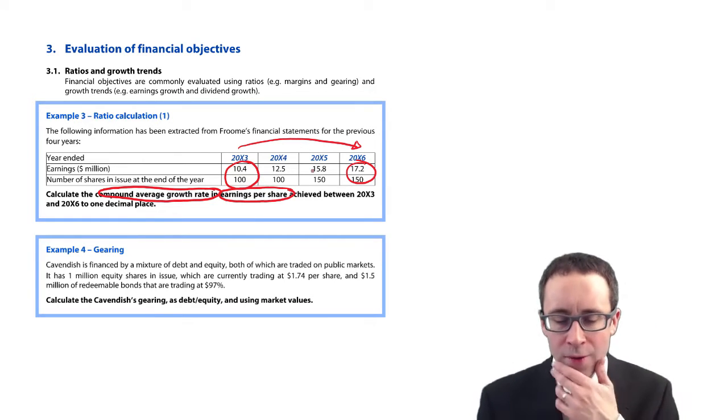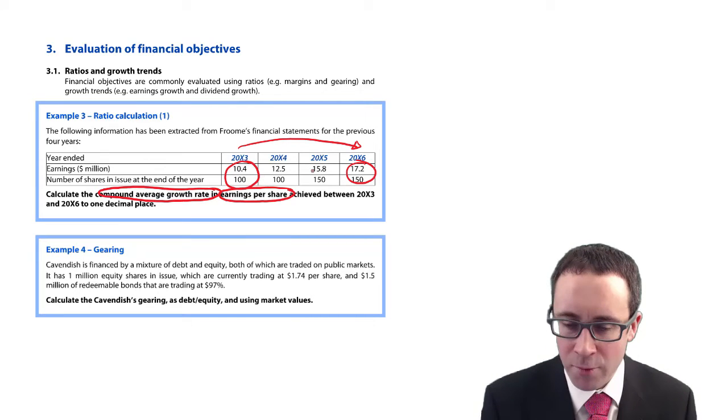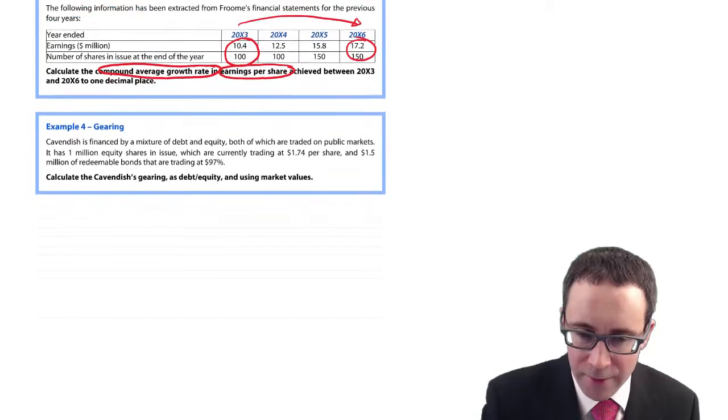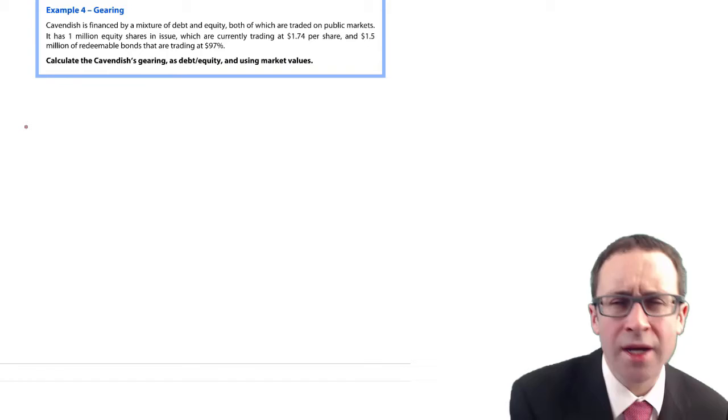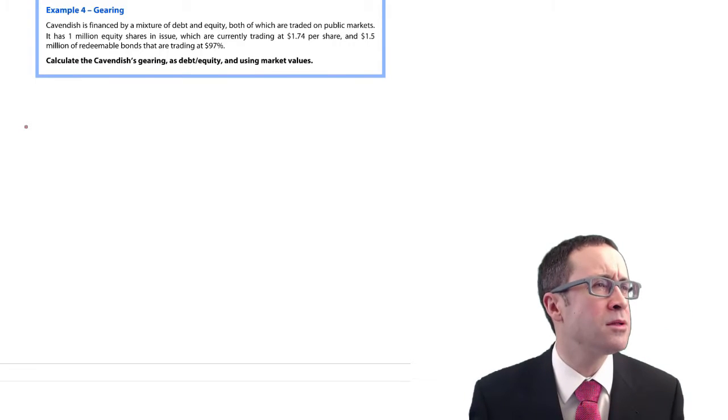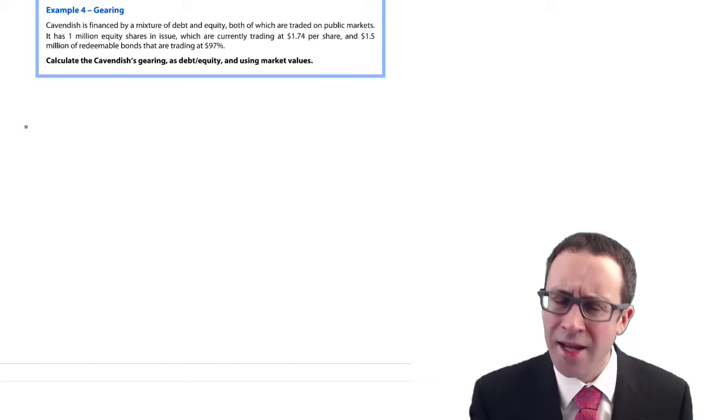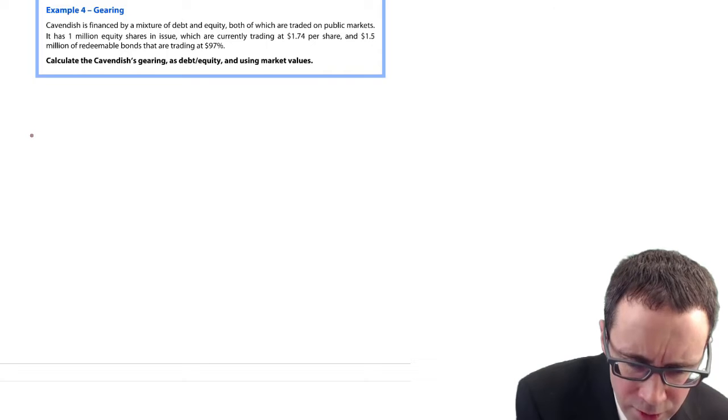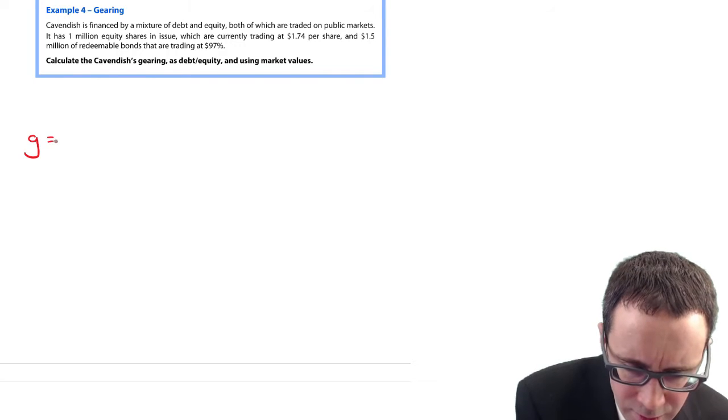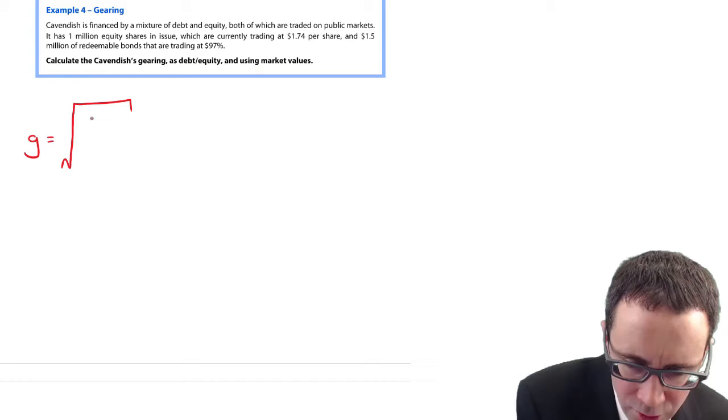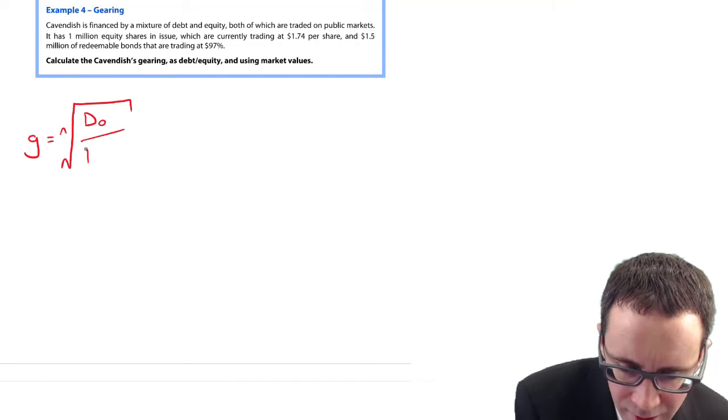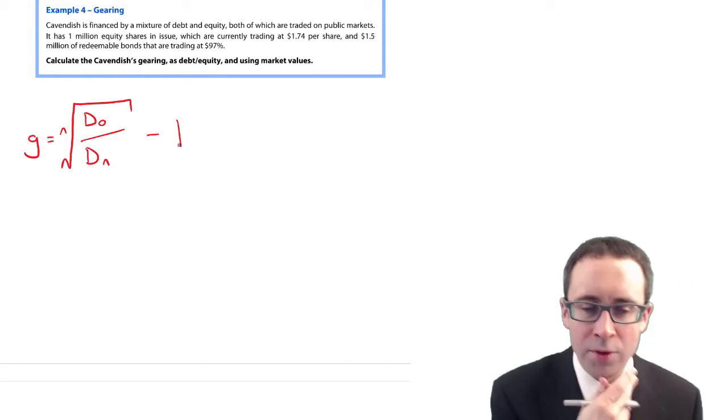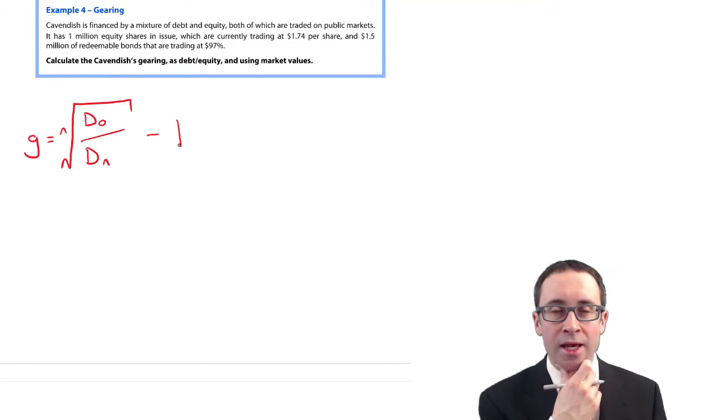Remember that formula from your previous studies in F2. When you looked at your growth rate and historic growth rate in dividends, we looked at the Nth root of the dividend now divided by the dividend N years ago, and we subtracted one.